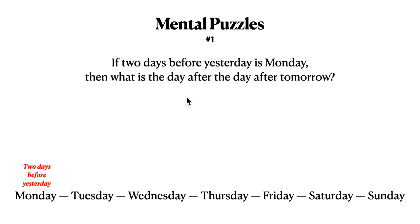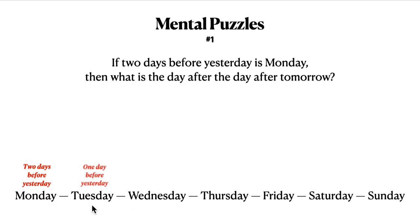We're asked about something in the future — the day after the day after tomorrow. We go step by step. If Monday is two days before yesterday, then Tuesday is one day before yesterday. Moving forward, that means Wednesday is yesterday.